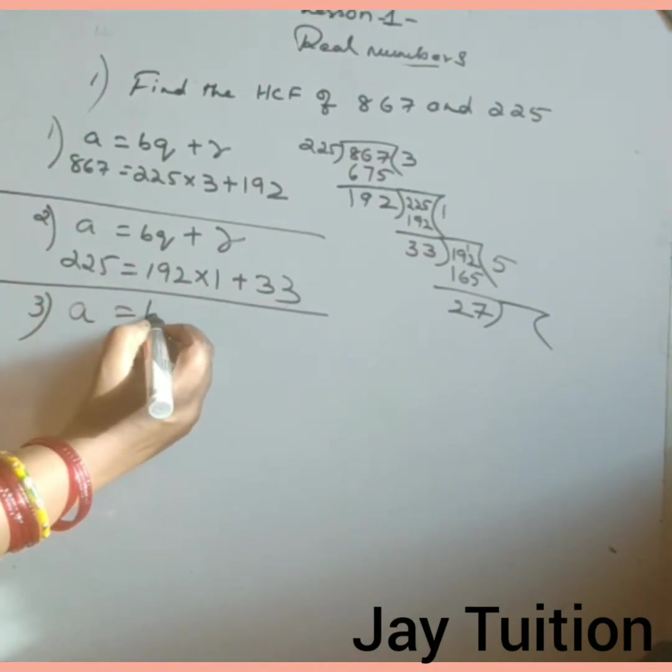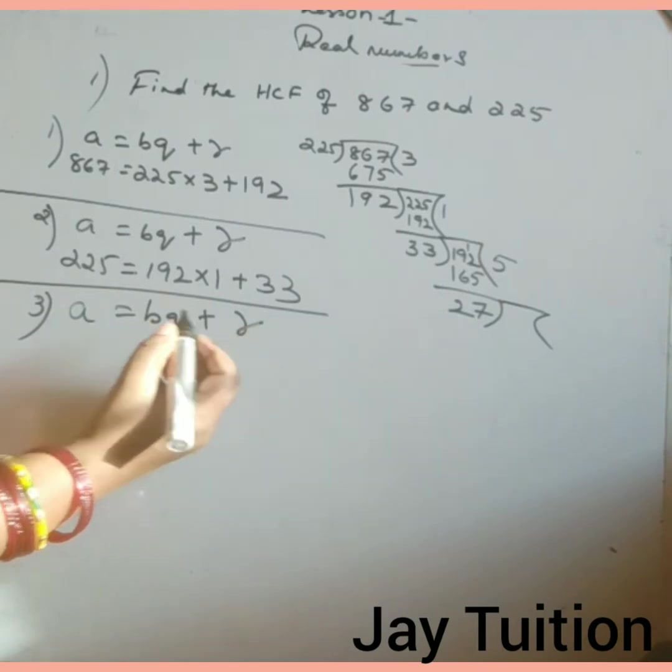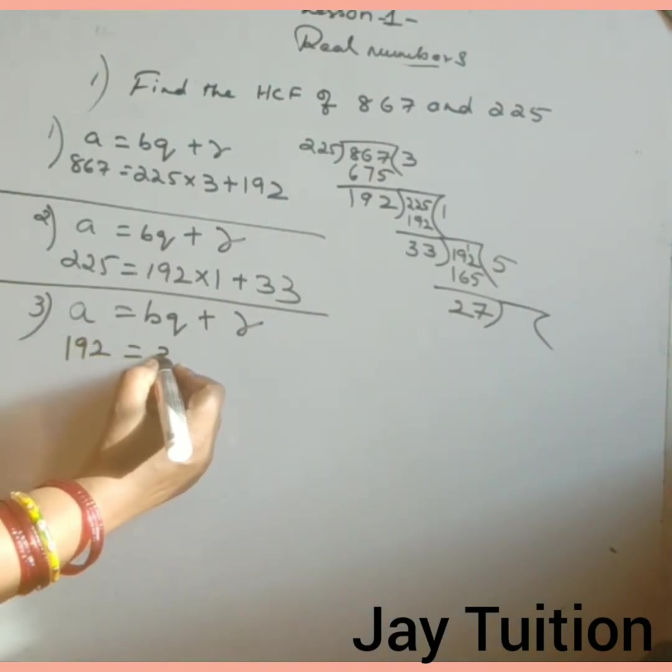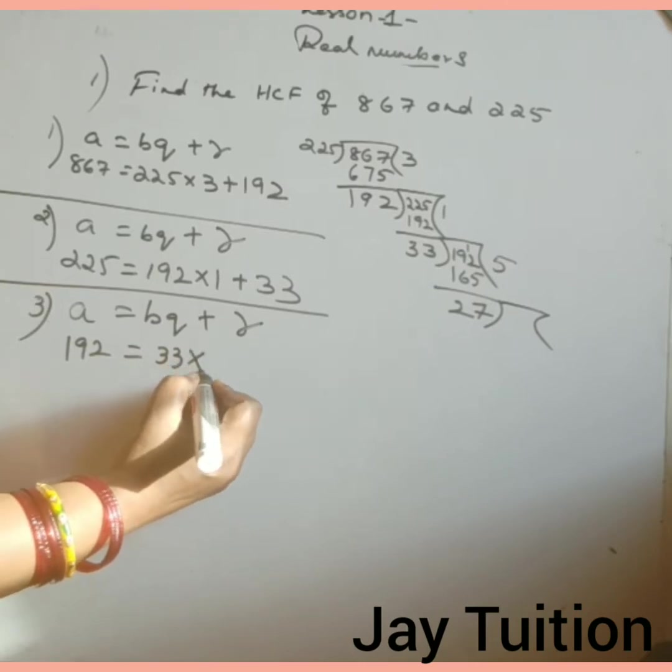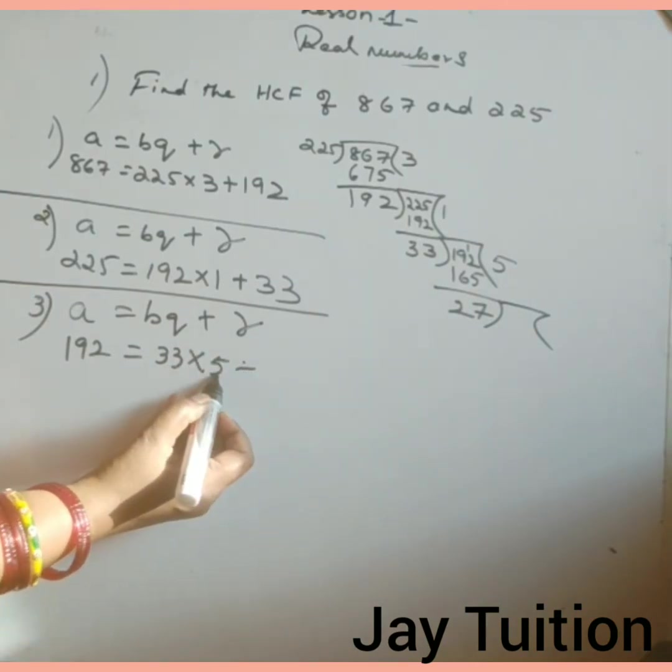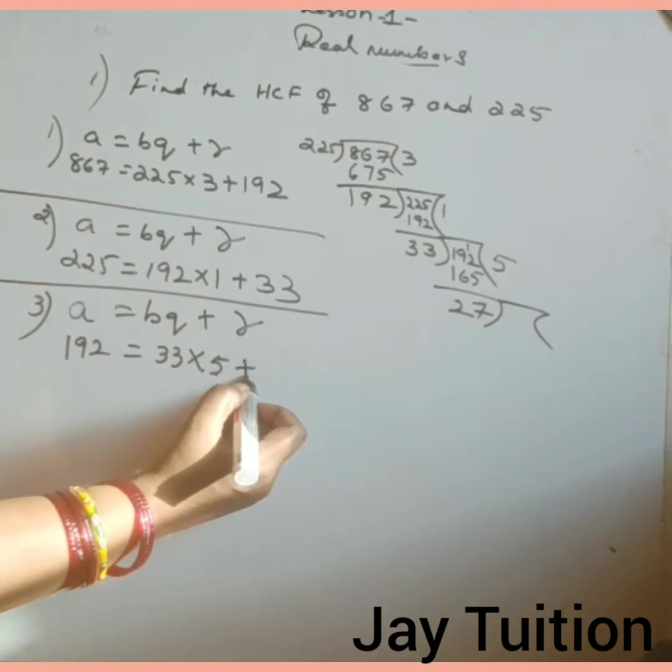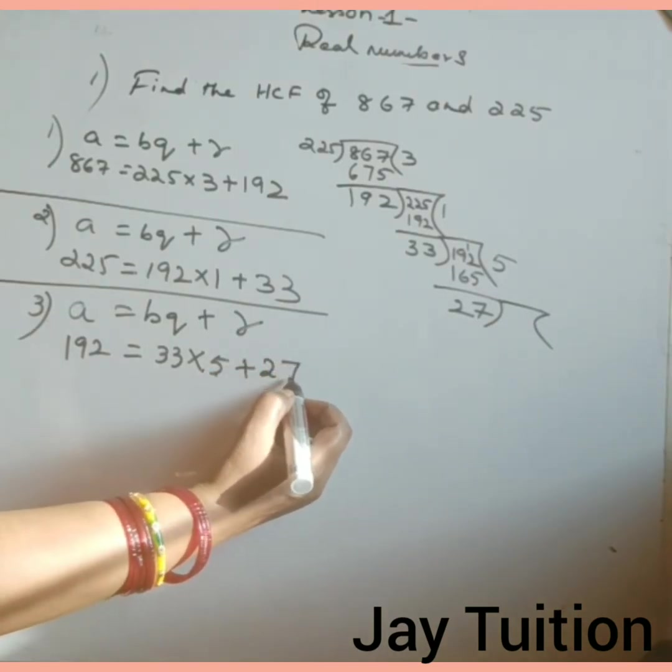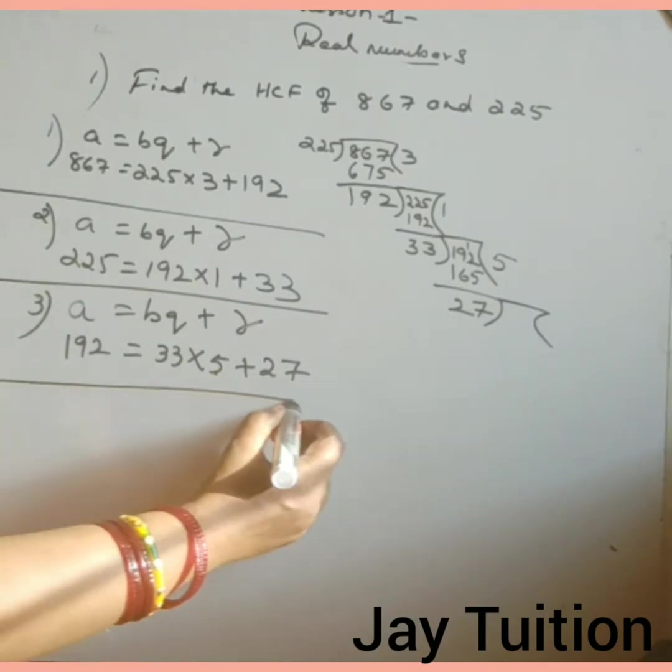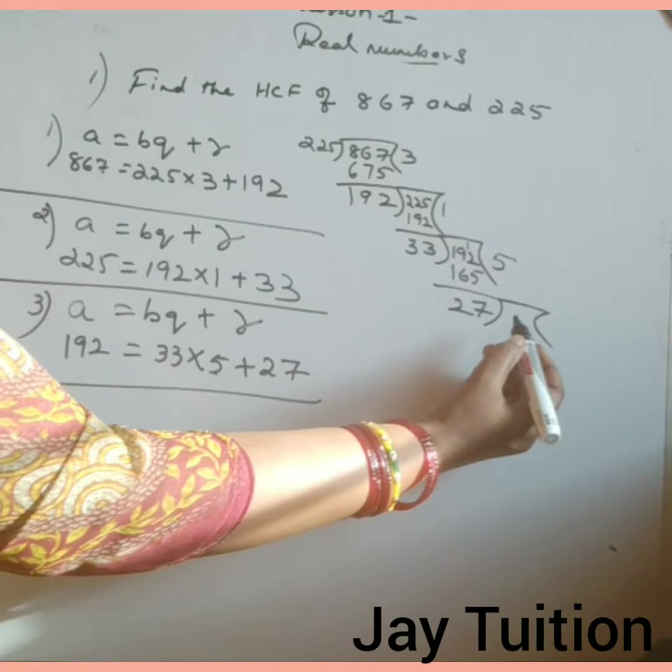A equals to BQ plus R: A is 192, B is 33 into quotient 5 plus remainder 27. If you solve this and add, you will get 192. So it is correct.